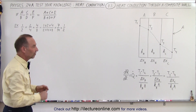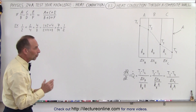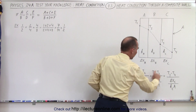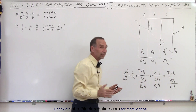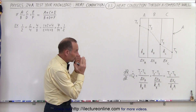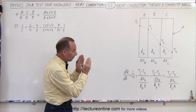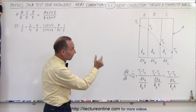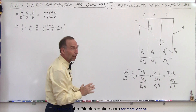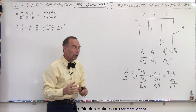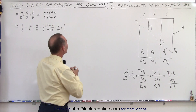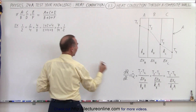We're using the same concept here — adding all the numerators together and all the denominators together. The numerators are the differences in temperature from the left side to the right side of each section, and the denominators are the heat resistances of each section.